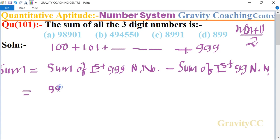999, so 999 times 999 plus 1 upon 2 minus 99 times 99 minus